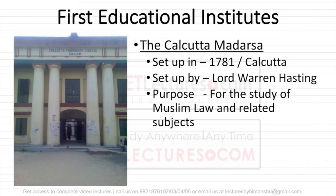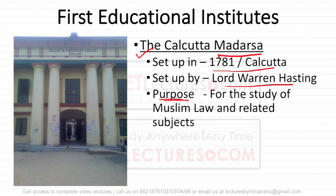The first education institute established in India was the Calcutta Madarsa. It mixed Indian traditional teaching with Western education. It was established in 1781 in Calcutta and was started by Lord Warren Hastings. The basic purpose was the study of Muslim laws and related subjects, so that they could more easily deal with the Muslim community.